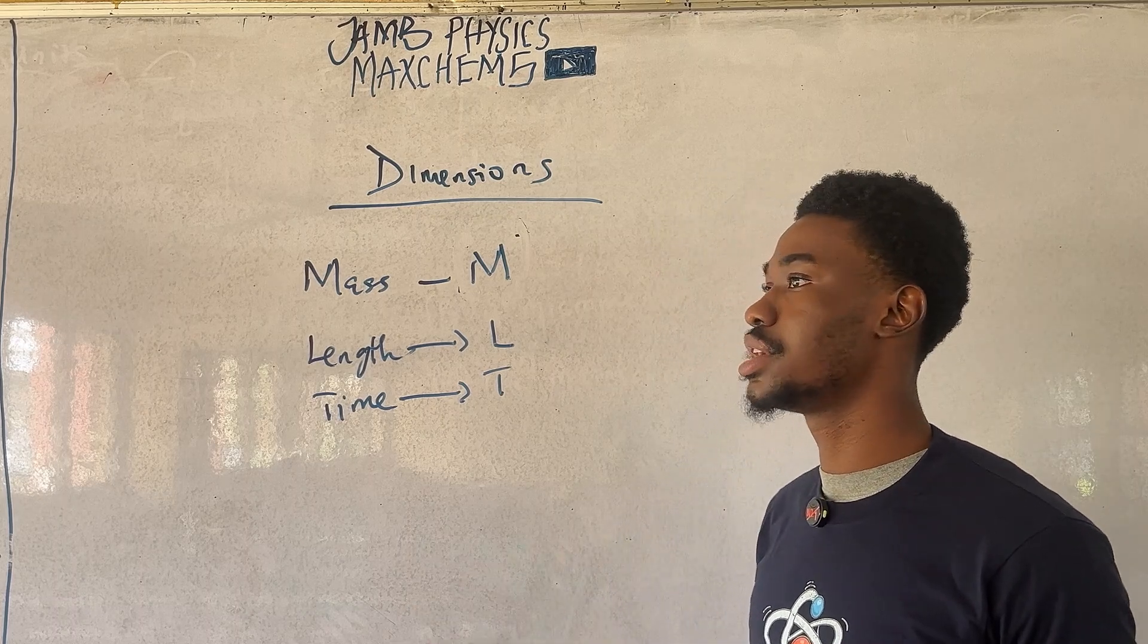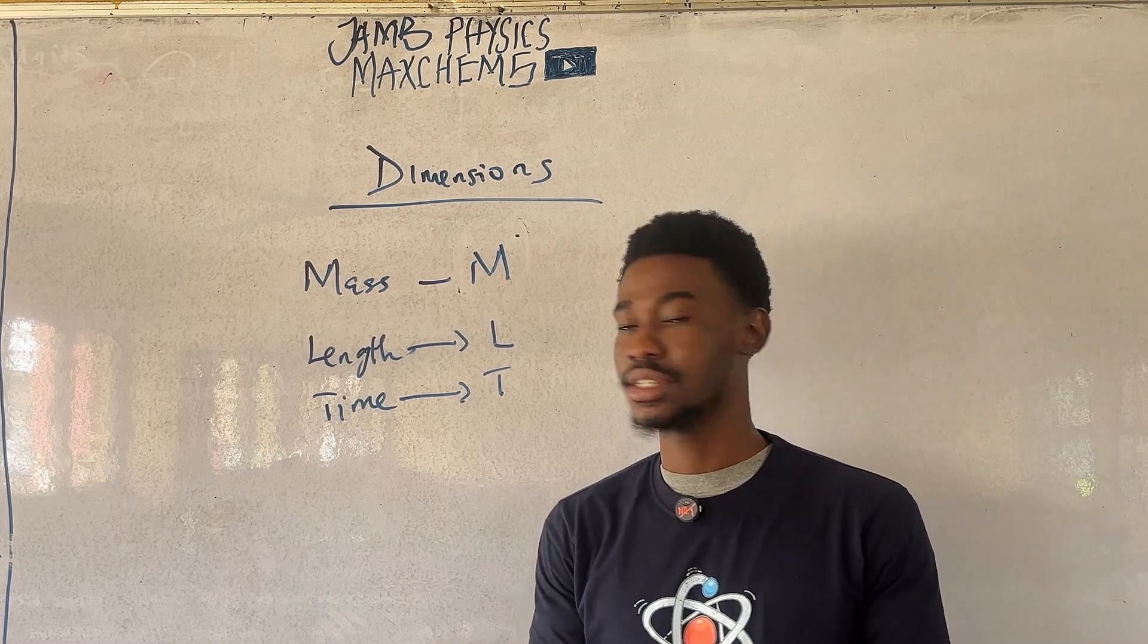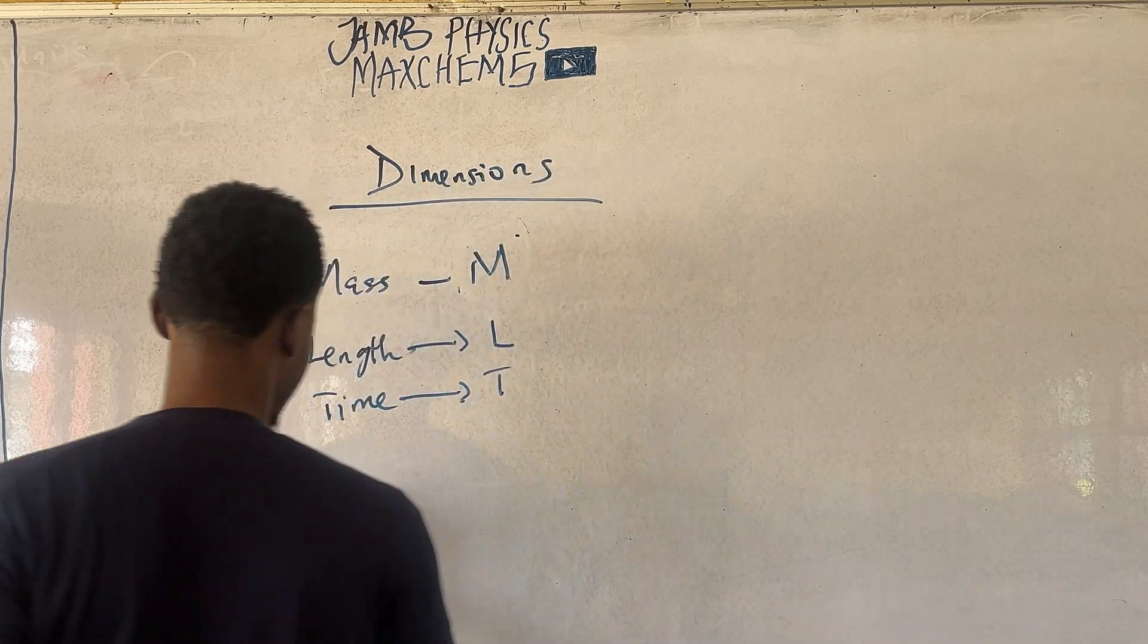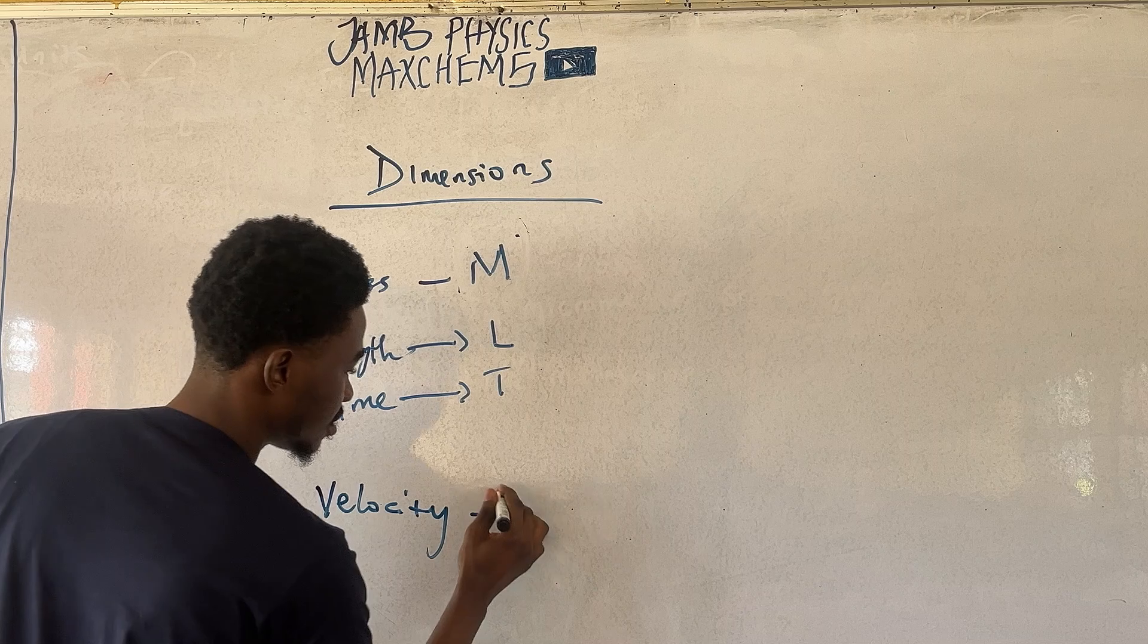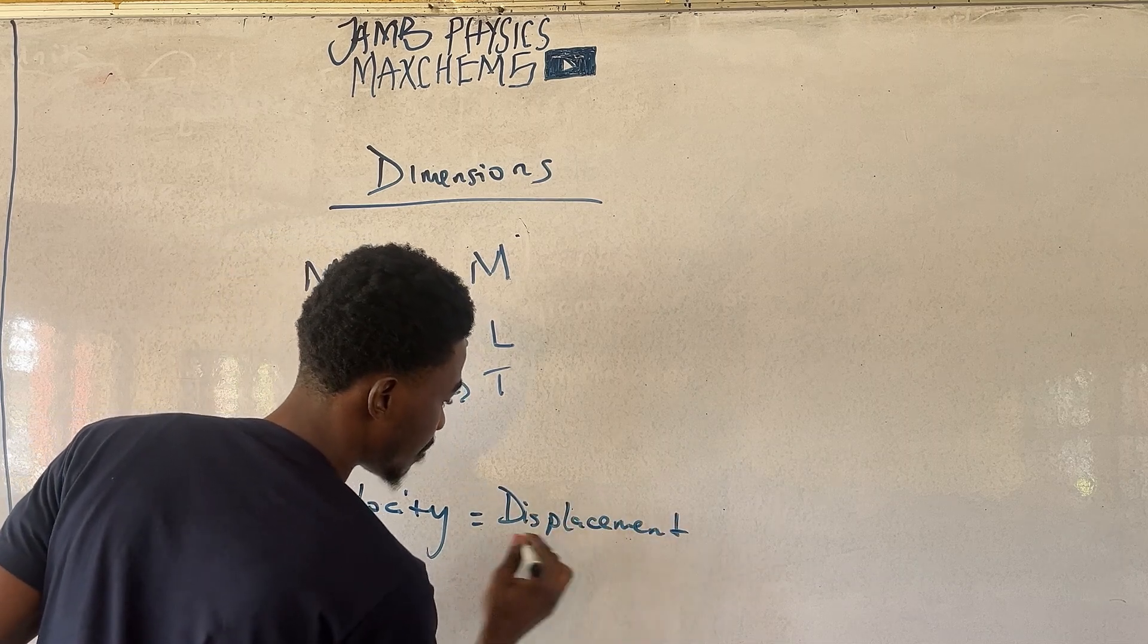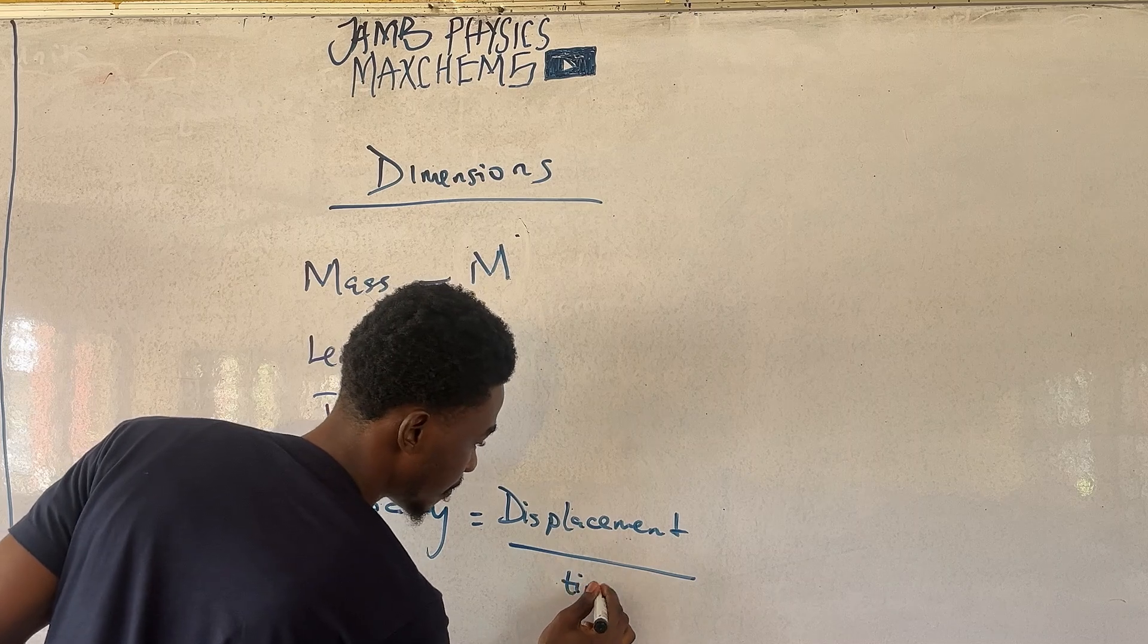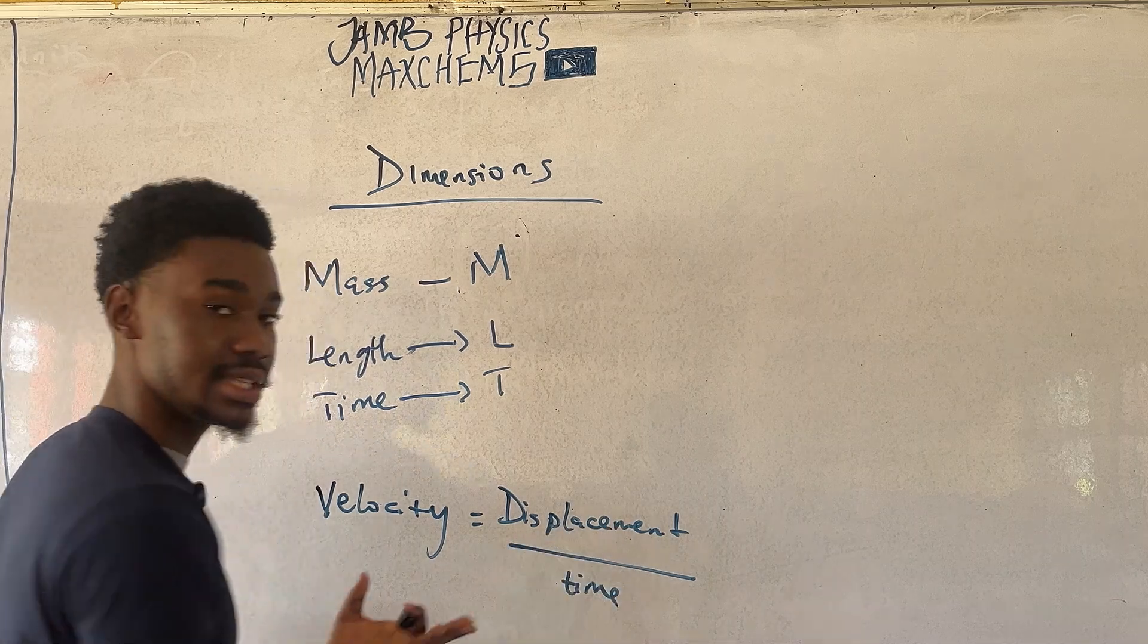Suppose we want to measure velocity. Velocity is not a fundamental quantity. It's a derived quantity. So, velocity is displacement per unit time. Not distance per unit time. That would be speed. So, displacement by unit time.